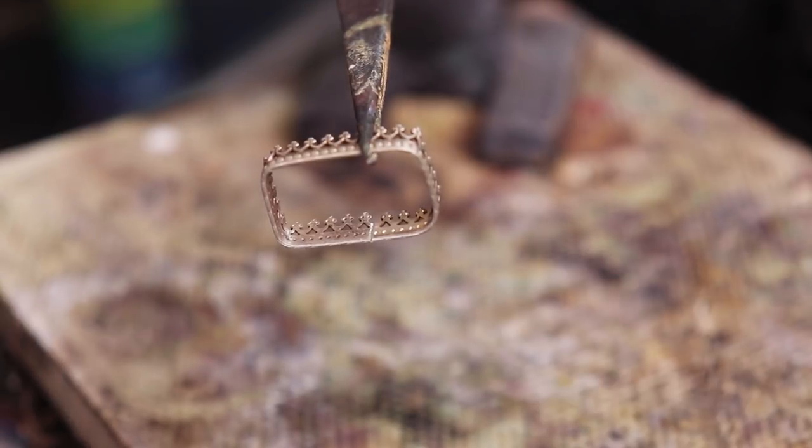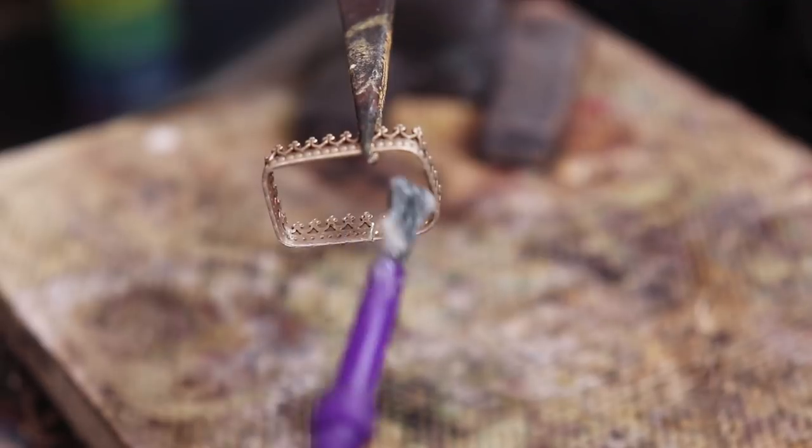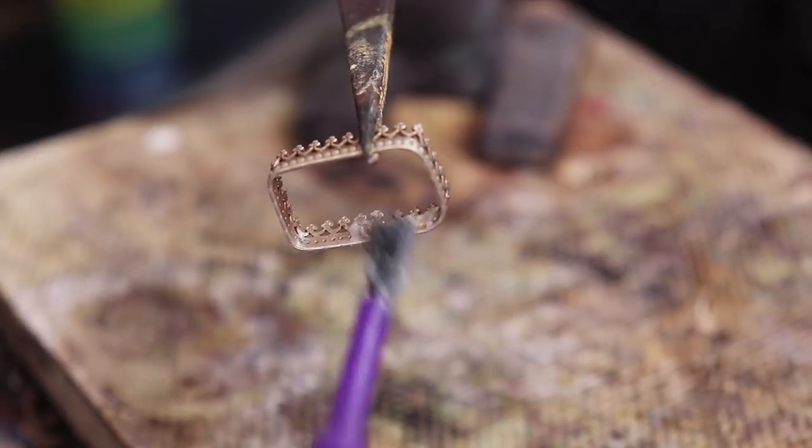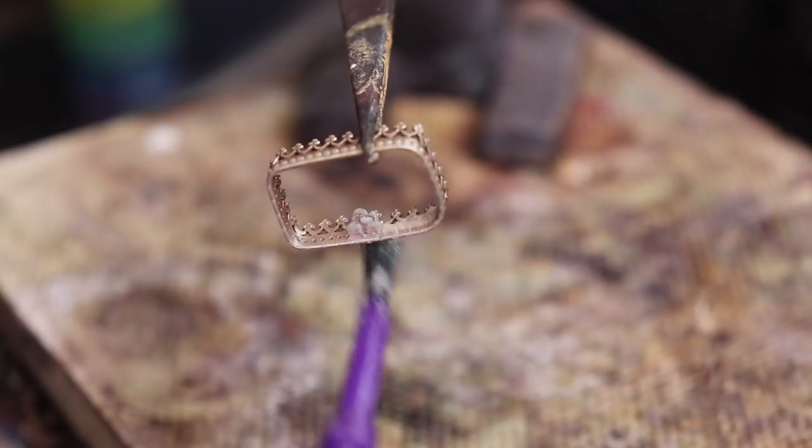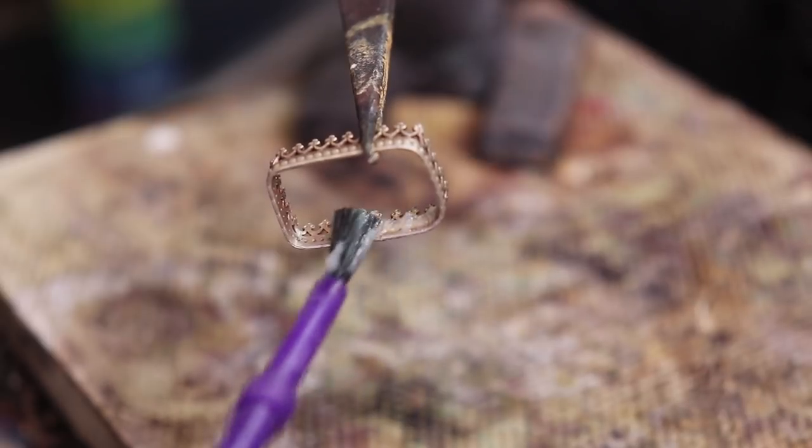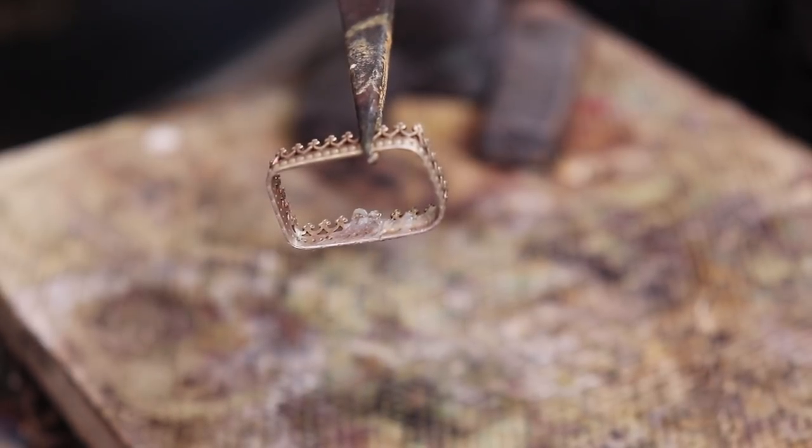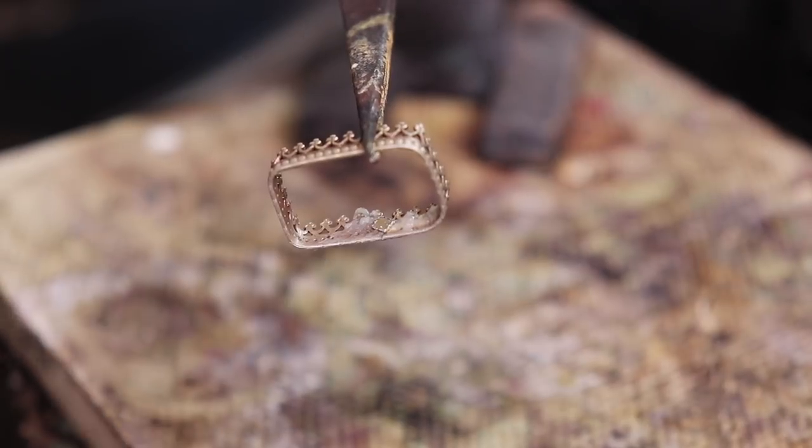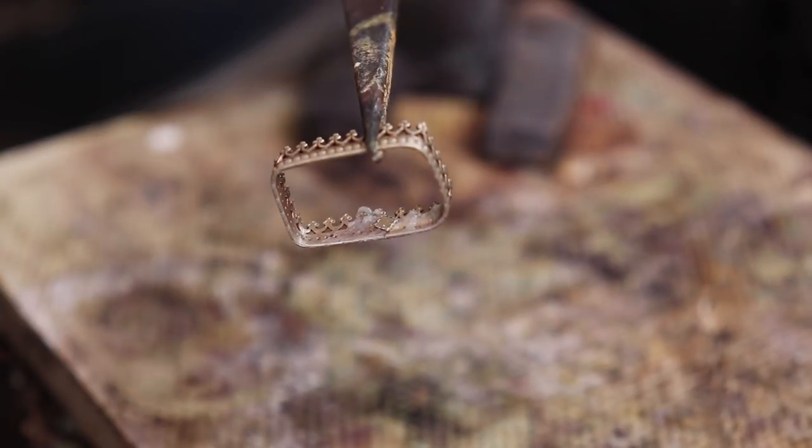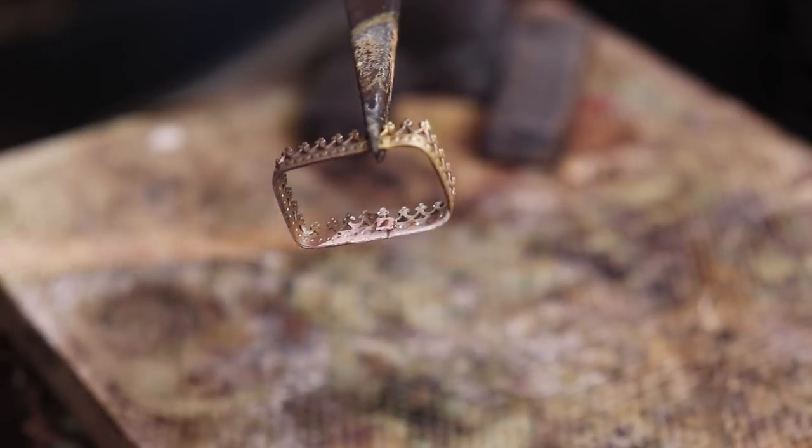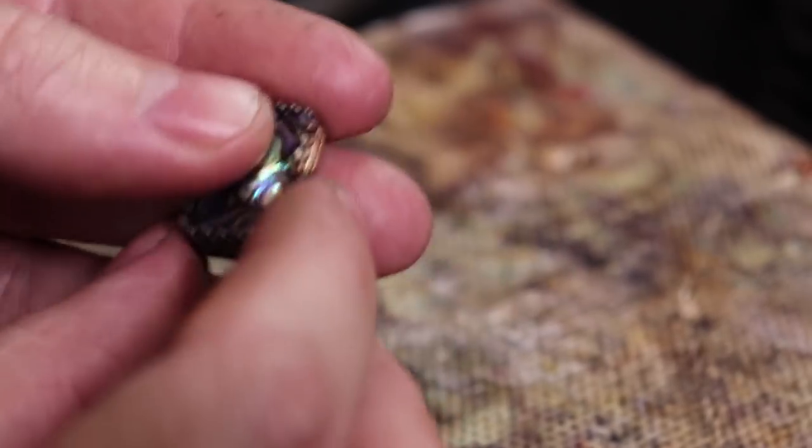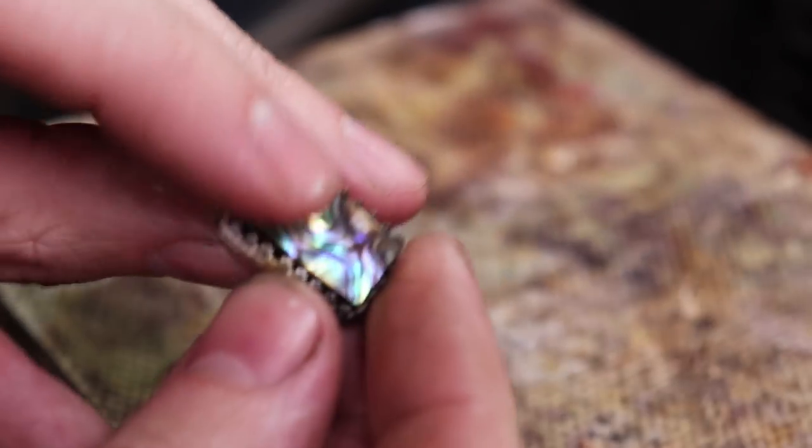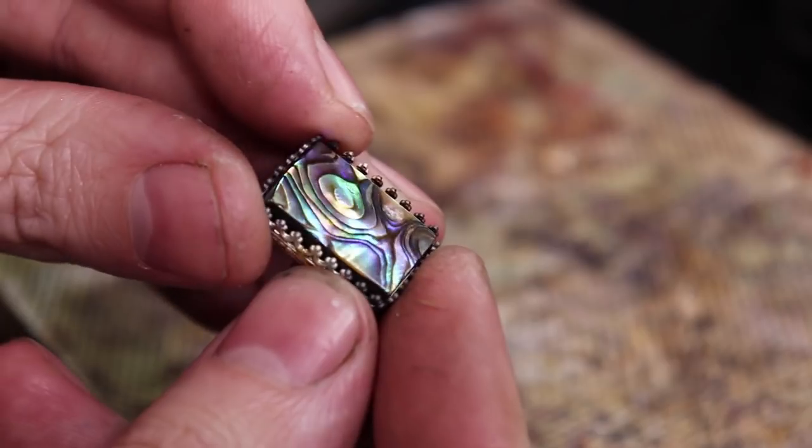To solder this, I'm just going to hold it with a third hand, apply some flux to the solder joint area, and place a little piece of hard silver solder onto the joint, and carefully heat this without melting it, because you can melt this really easily. Once it's done soldering, I'm going to quench it in some water, and then test fit it onto my stone to make sure that it's going to fit.